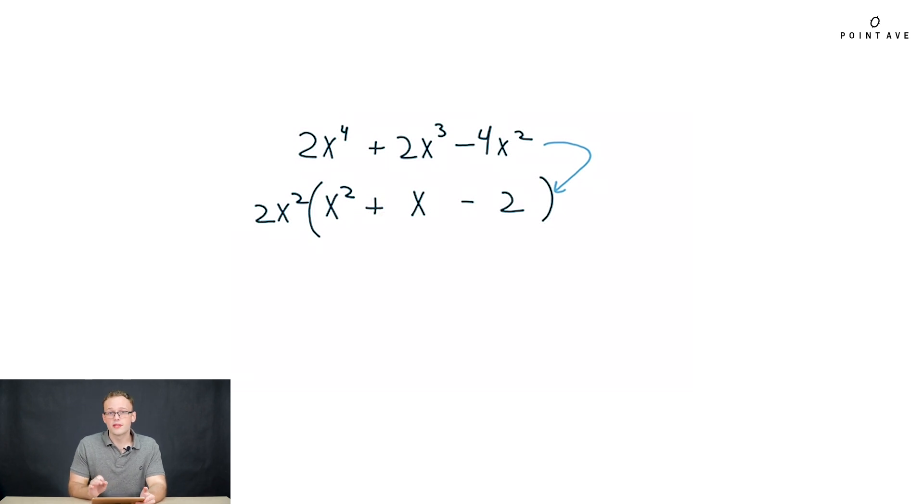One important thing is whenever you factor, be it common factors or product sum or anything, you always want to check your work by multiplying back and making sure that it is equal to what you originally had. If we do that here, what we get is indeed equal to what we started with. So we know we're right, at least so far.